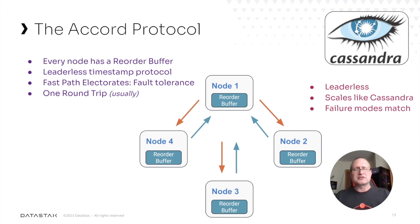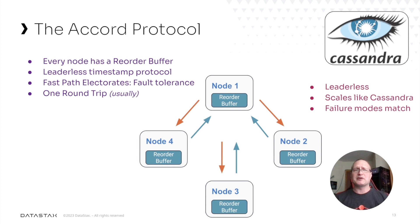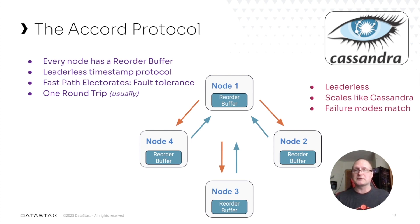There's also a slow path, which we'll touch on in a moment. Usually we can get this done in one round trip. The nice thing about Accord is that it's leaderless — it scales much like Cassandra does, and its failure modes tend to closely mirror Cassandra's failure modes as well. So it makes a great fit for what we're trying to do.